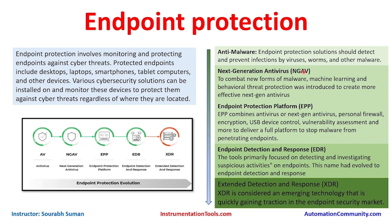Next is Next Generation Antivirus (NGAV), introduced to combat new forms of malware using machine learning and behavioral threat protection to create more effective antivirus solutions. NGAV has behavioral capabilities — it can understand how processes are acting, so if a process gets infected by malware it will behave differently. For new signatures that can't be identified by signature alone, NGAV can predict based on behavior whether something is a virus, worm, or rootkit, and prevent it from executing and proliferating inside the environment.